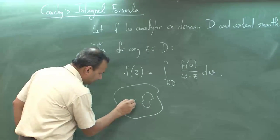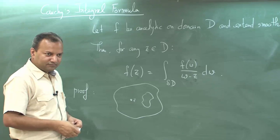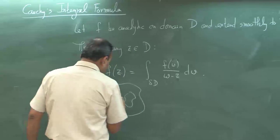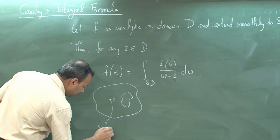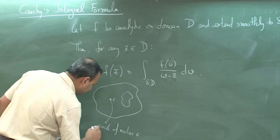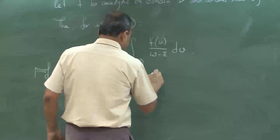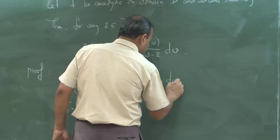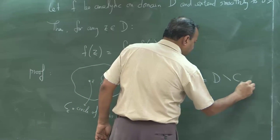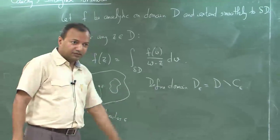What we do is: this is the domain D and this is the point z. We define a new domain by striking out a very tiny circle around z — just cut this out from the domain and you get a new domain. Let us call this circle C_ε, a circle of radius ε. Take out C_ε from the domain and define a new domain D_ε. In the domain D_ε, this function is analytic.